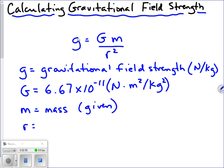R is equal to the radius, which is the distance measured in meters from the center of the object creating the gravitational field. So if it's a planet like Earth, it would be from the center of the Earth, not from the surface. We always have to watch out for that when doing calculations.